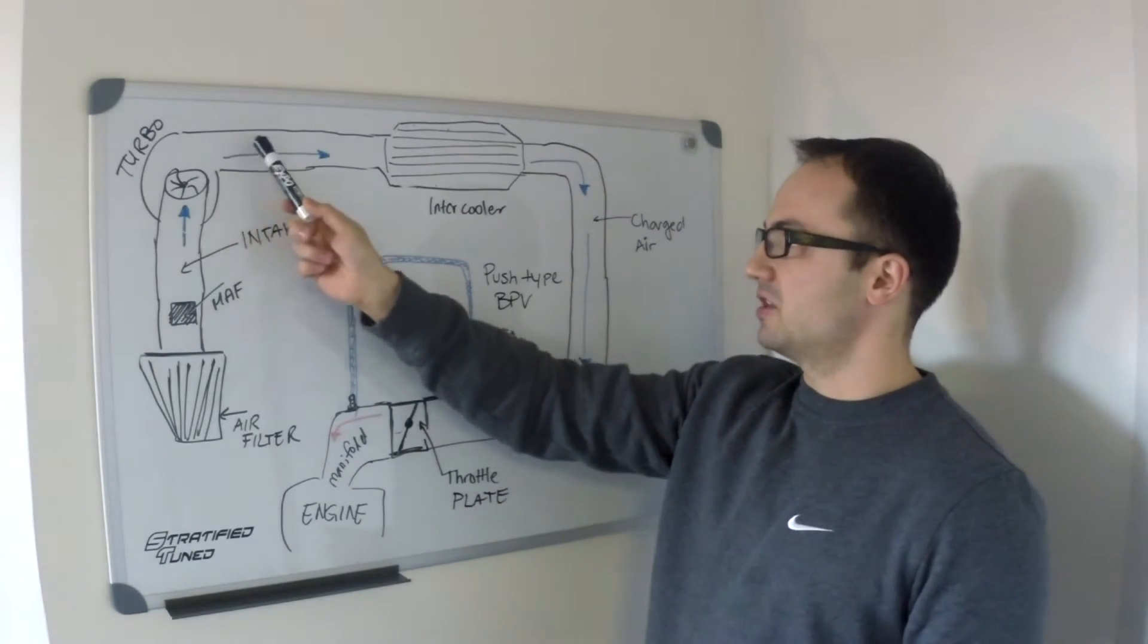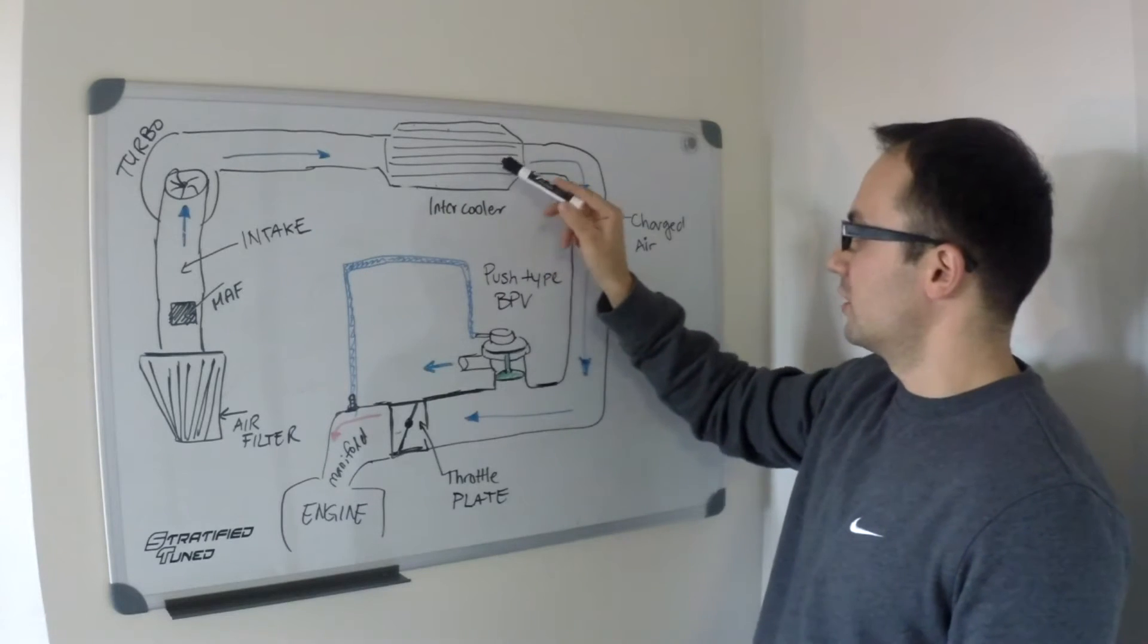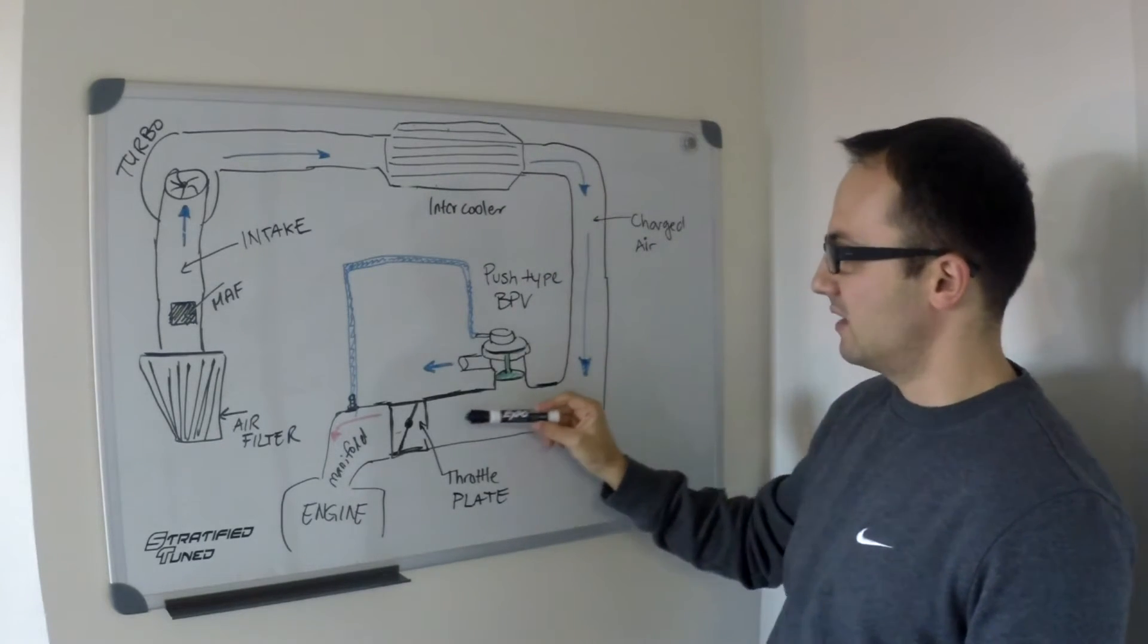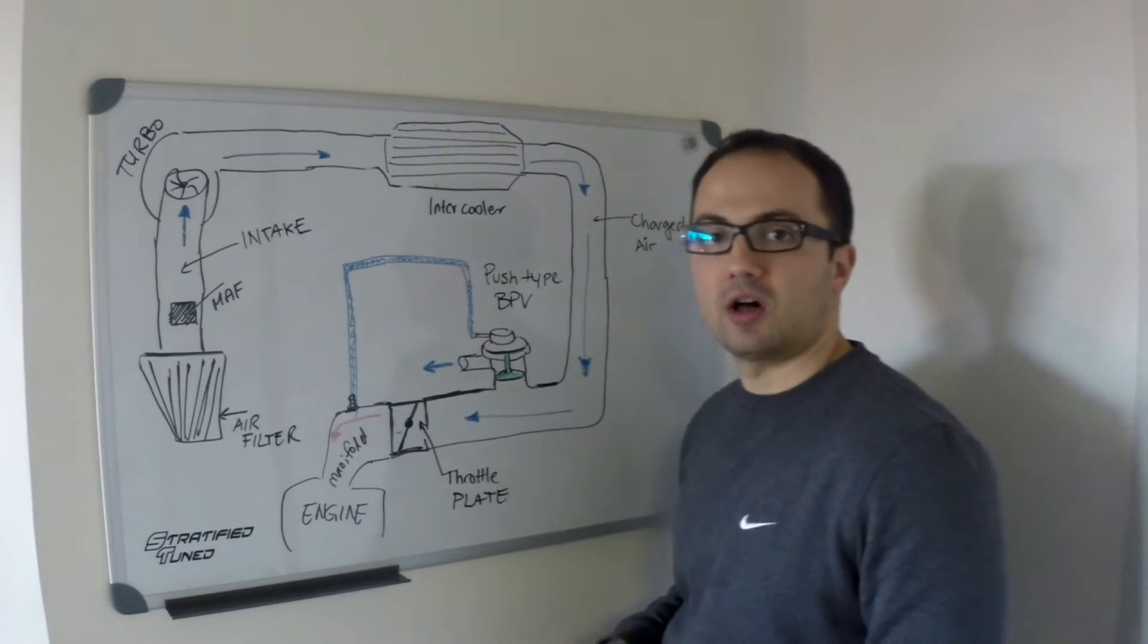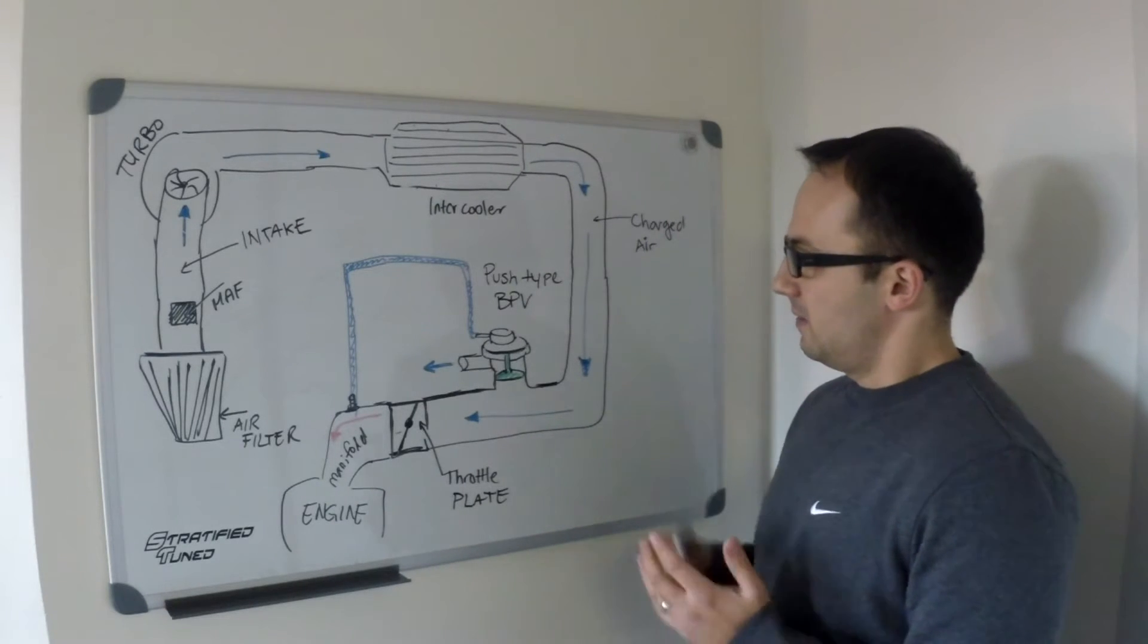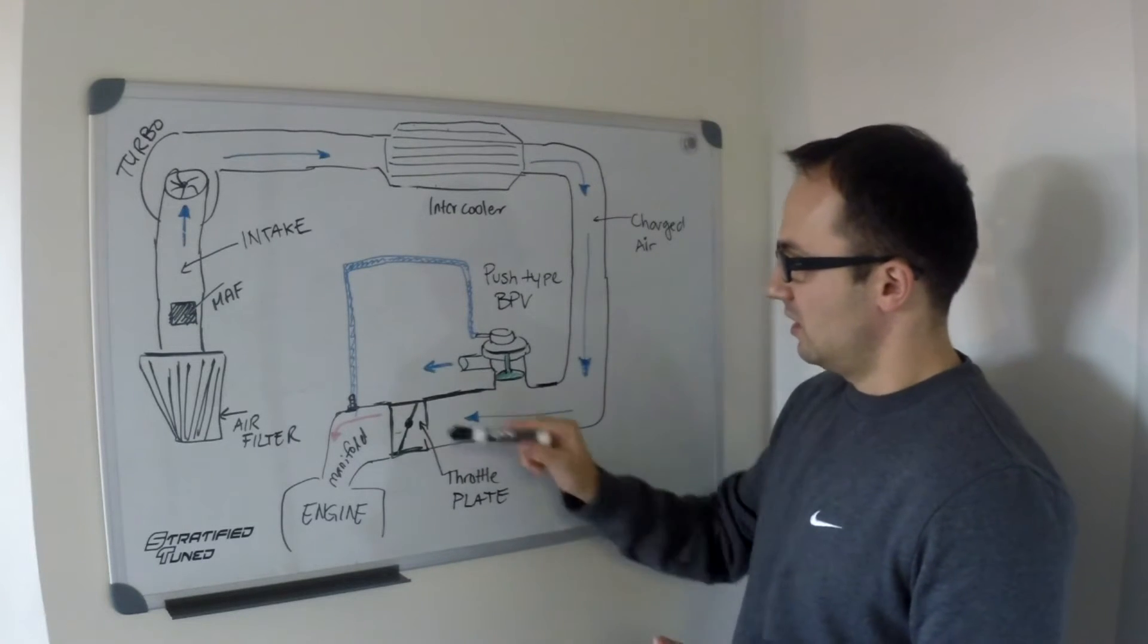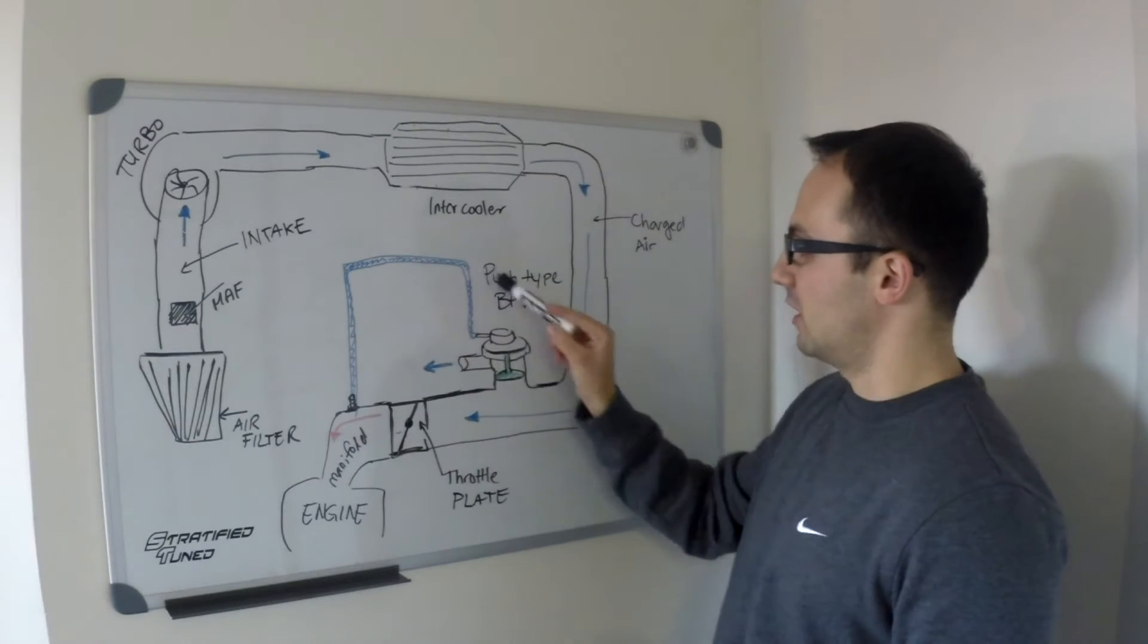After that, the air is compressed here by the turbocharger. It passes through an intercooler—usually the cooled air that is still under pressure is then passed through into your manifold and engine through your throttle body. Now, the bypass valve is a device that has two chambers to it. One chamber is connected to your manifold after the throttle body—the top chamber.